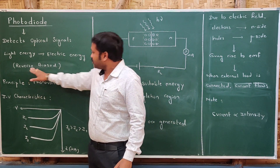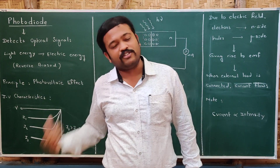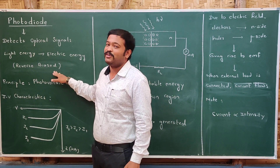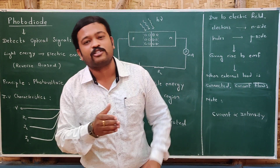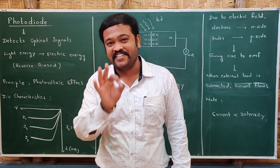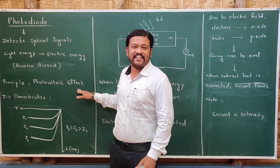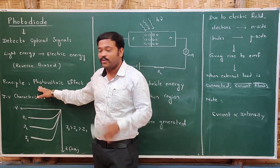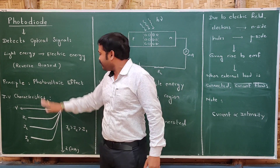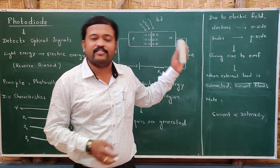The photodiode works in reverse bias, similar to the Zener diode. We connect it in reverse bias because the fractional change of current in reverse bias can be easily measured compared to forward bias. The principle used in the photodiode is the photovoltaic effect — when light falls on the diode, an EMF is generated, and hence current is generated.